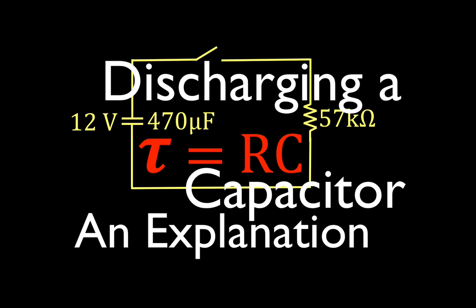As you can see in today's video, I am going to go over an explanation for discharging a capacitor. We're going to be talking about the voltage with respect to time across the capacitor and the current through the circuit with respect to time. I also hope to give you a good conceptual understanding of the time constant, which we calculate as R times C.